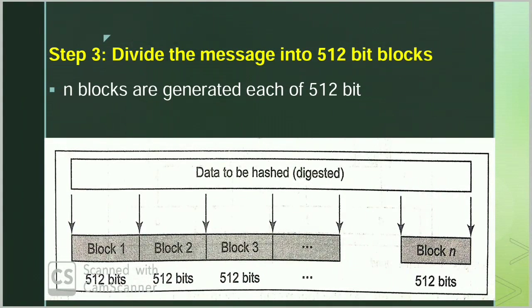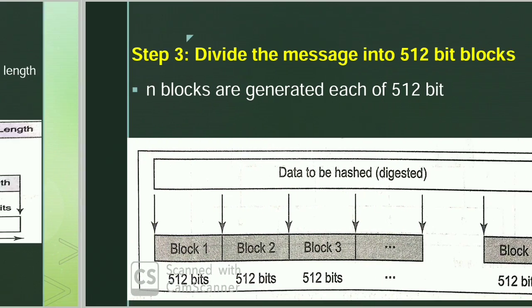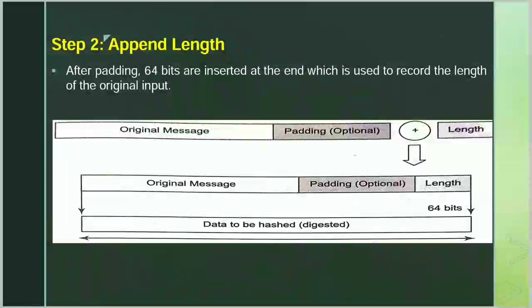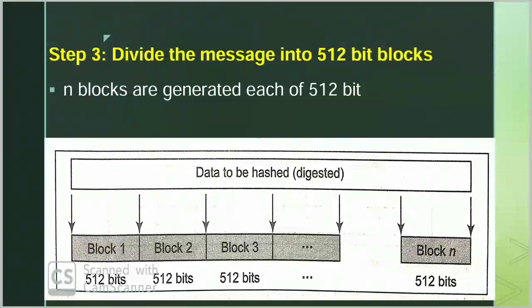Now in Step 3 we divide the input message into 512-bit blocks। Step 2 के बाद जो हमारे पास message था वो exact multiple of 512 bits हो गया। This data to be hashed is received in Step 2. Step 2 का output है data to be hashed। Step 3 में उसे हम 512-bit के blocks में divide कर रहे हैं। Blocks कितने होंगे यह depend करता है input plaintext message के size पर। हम assume करेंगे कि n number of blocks generate हो सकते हैं। हम 512-bit के blocks में divide इसलिए कर रहे हैं क्योंकि input plaintext message 512-bit के blocks में process होगा।